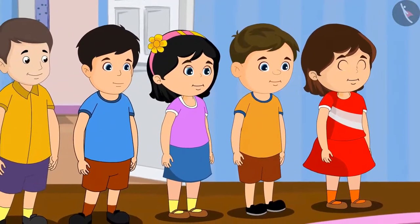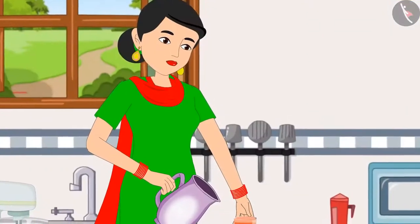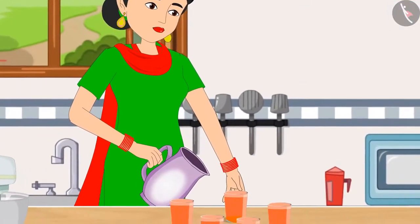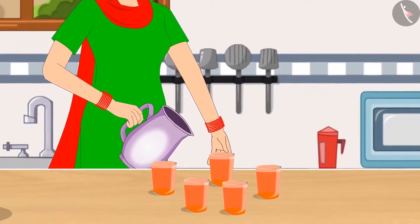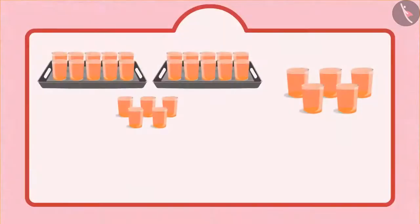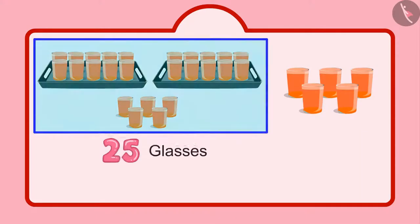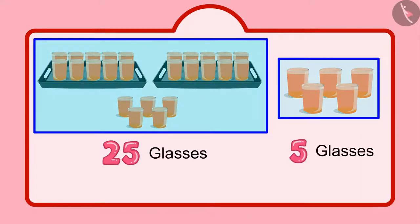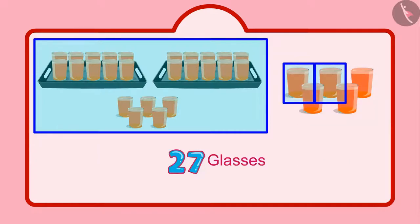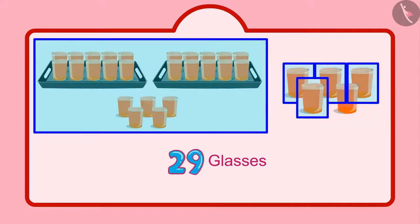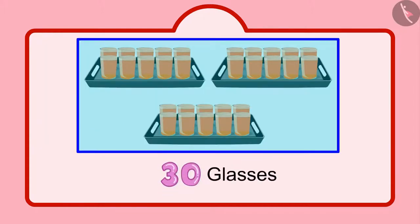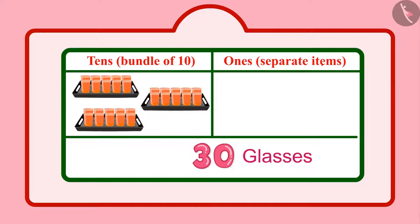After some time, some more friends of Chotu came home, and Chotu's mother made more sherbet for them. Chotu had already distributed 25 glasses, and after that 5 more glasses were added. So that makes it 26, 27, 28, 29, 30. That means 30 glasses, which we write like this. In 30, there are 3 tens and 0 units.